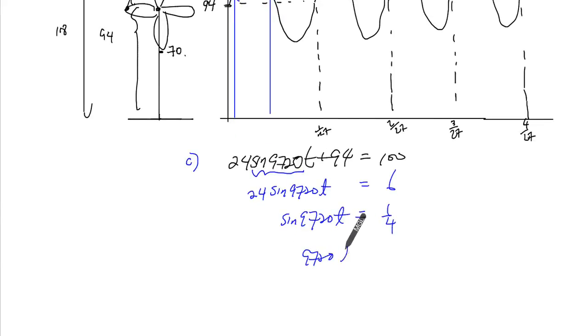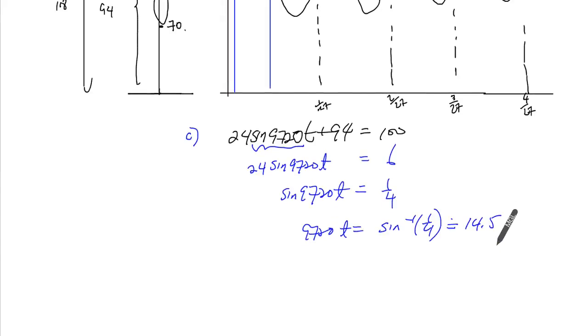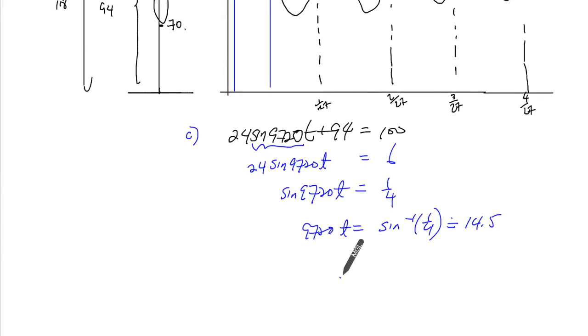So 9720t will then equal to sine inverse of 1 over 4. And this is roughly 14.5. And t then will equal to 14.5 over 9720.